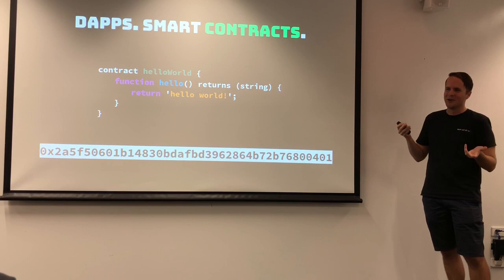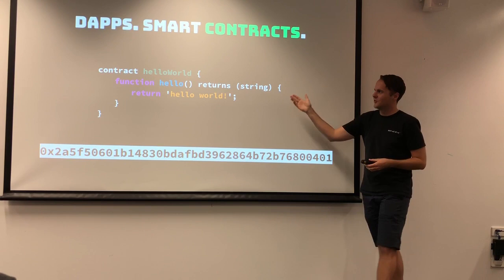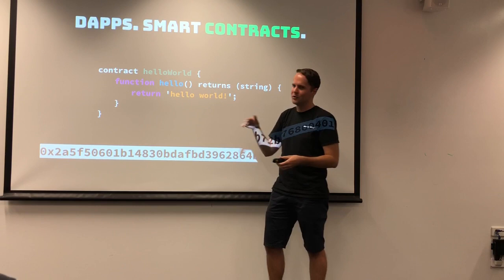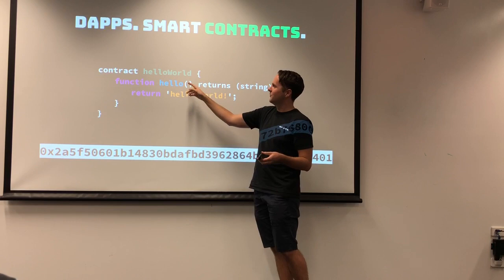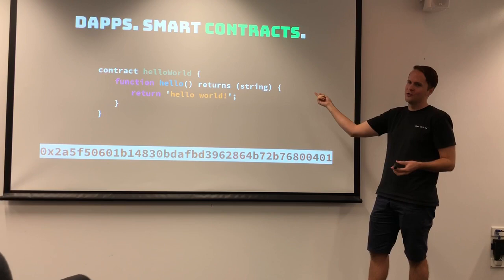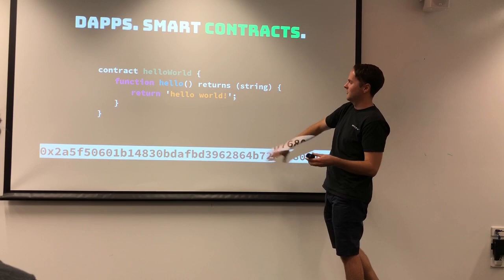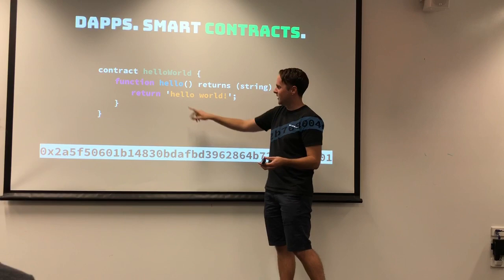On Ethereum, these are called smart contracts. It's basically just a tiny little piece of code. This contract right here is a hello world contract. When you write this code and deploy it to either the testnet or the mainnet on Ethereum, you get an address back — which can either be a personal wallet address or an address to a specific contract you've deployed. Everything almost has an identifier so you can point to it, a bit like an IP address. By calling that address, you can call the function and it will kick out 'hello world.'